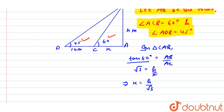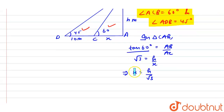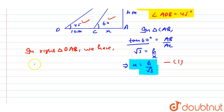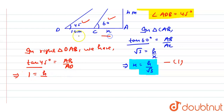Now in right triangle DAB, we have tan(45°) equals AB divided by AD. Since tan(45°) is 1, we have 1 equals h divided by AD, where AD is x plus 10. So this implies that x plus 10 equals h.